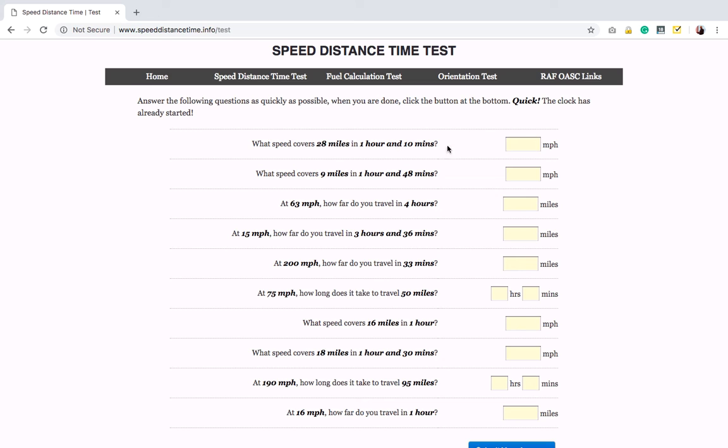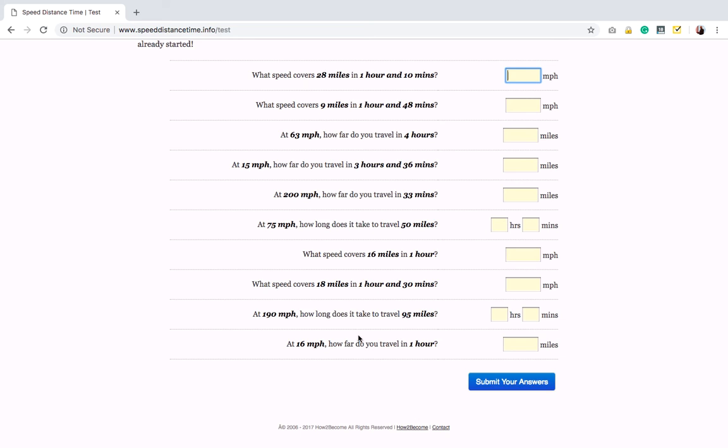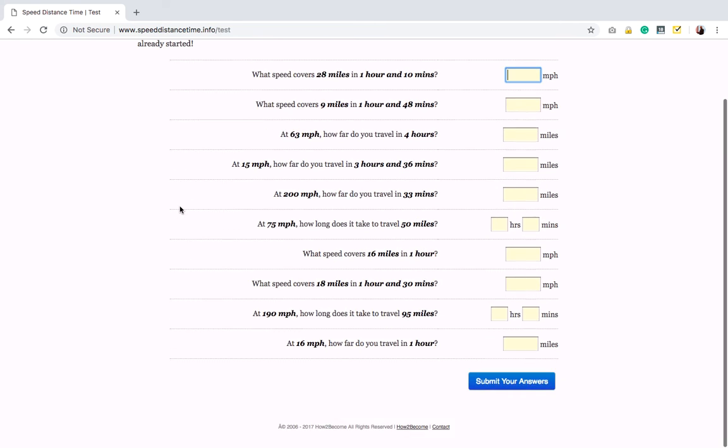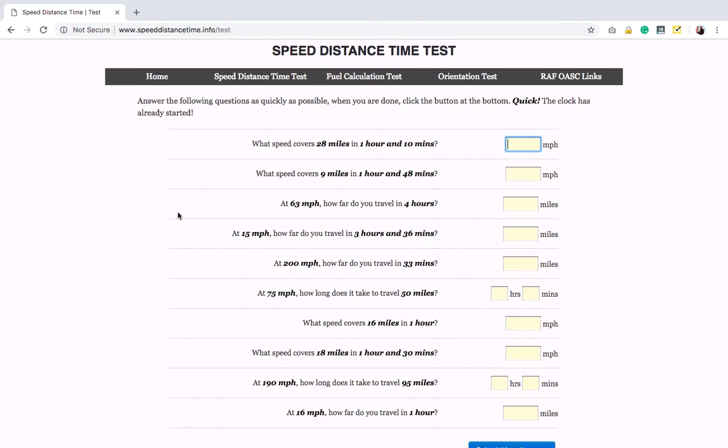So, it goes through to this page, what speed covers 28 miles in one hour and 10, you put your answer in there, submit your answers at the bottom. So you see, you've got the 10 questions there for you to try, and then you just refresh the page and it will just chuck out thousands and thousands of questions for you to try.